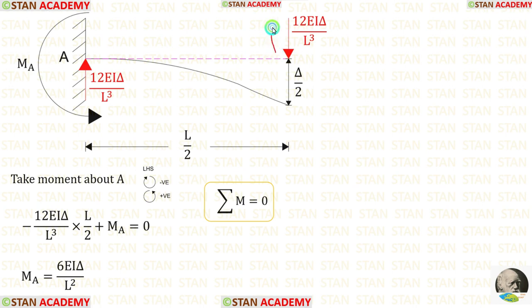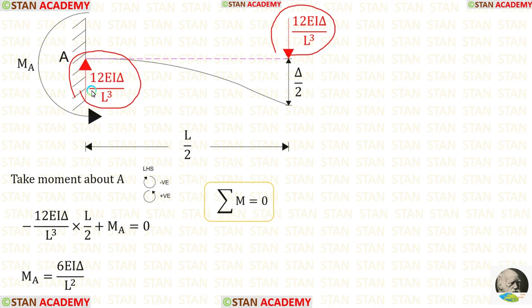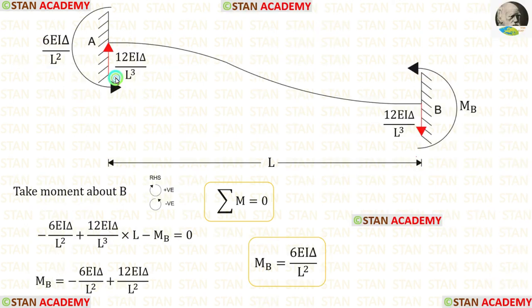Since the point load is acting downwards, RA should be acting upwards, but both of them will have the same value. In the fixed beam, we have found RA and MA. Now, let us take moment about B.